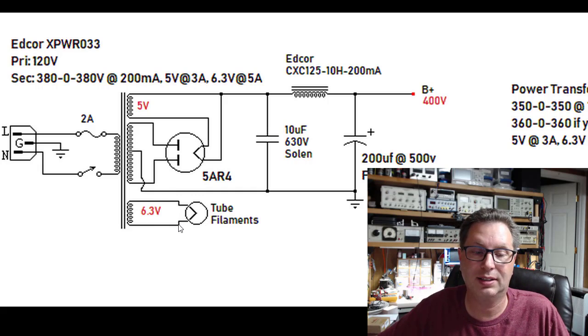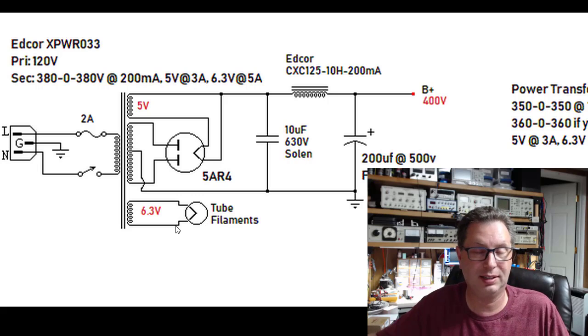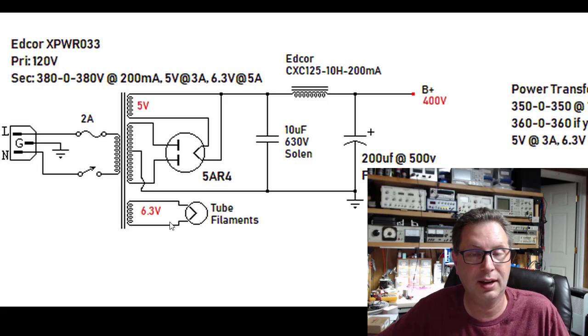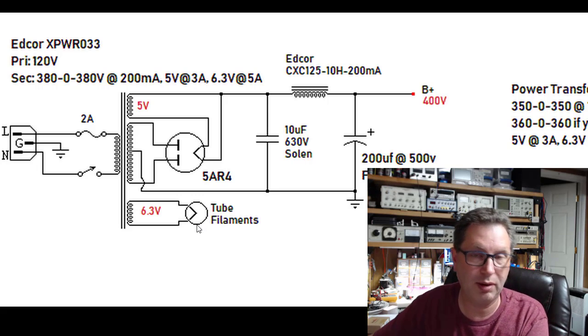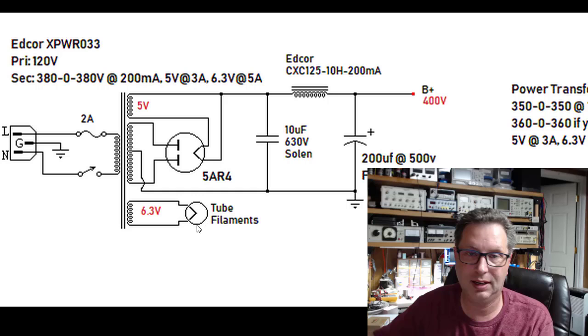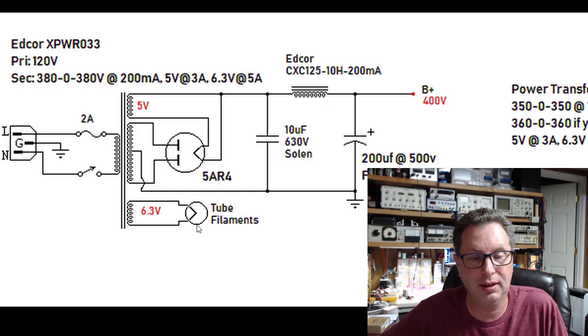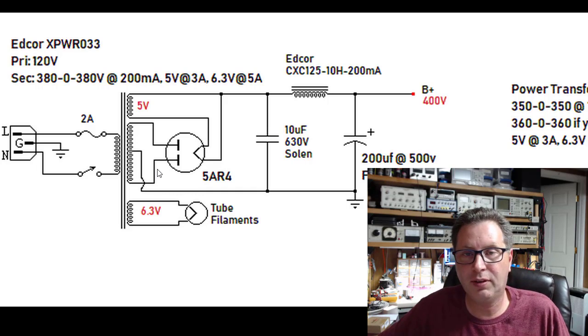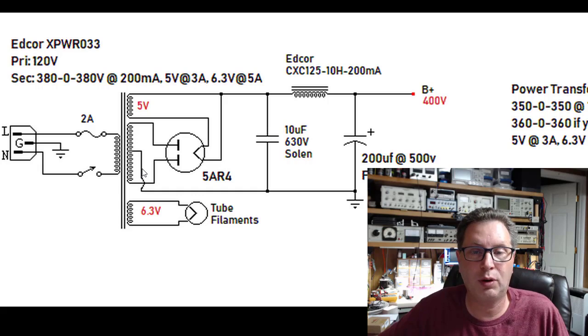You've got another winding here at 6.3 volts, which would be an AC sine wave coming out the other side. And the sole purpose of that is to heat up the filaments in the other tubes that are 6.3 volt filaments. That would be the KT88s and the driver tube in this case. And then you've got your, what I would call, high voltage secondary here. And if you'll notice, it is rated at 380 volts, 0 volts, and 380 volts.